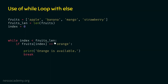After incrementing the index, we again check the condition, and then the next item is compared with orange. In this way, all the items of this list will be compared with orange. Now, there is one more thing we need to understand: we are printing 'orange is available' when fruits[index] equals orange, but what happens when orange is not available in this list?